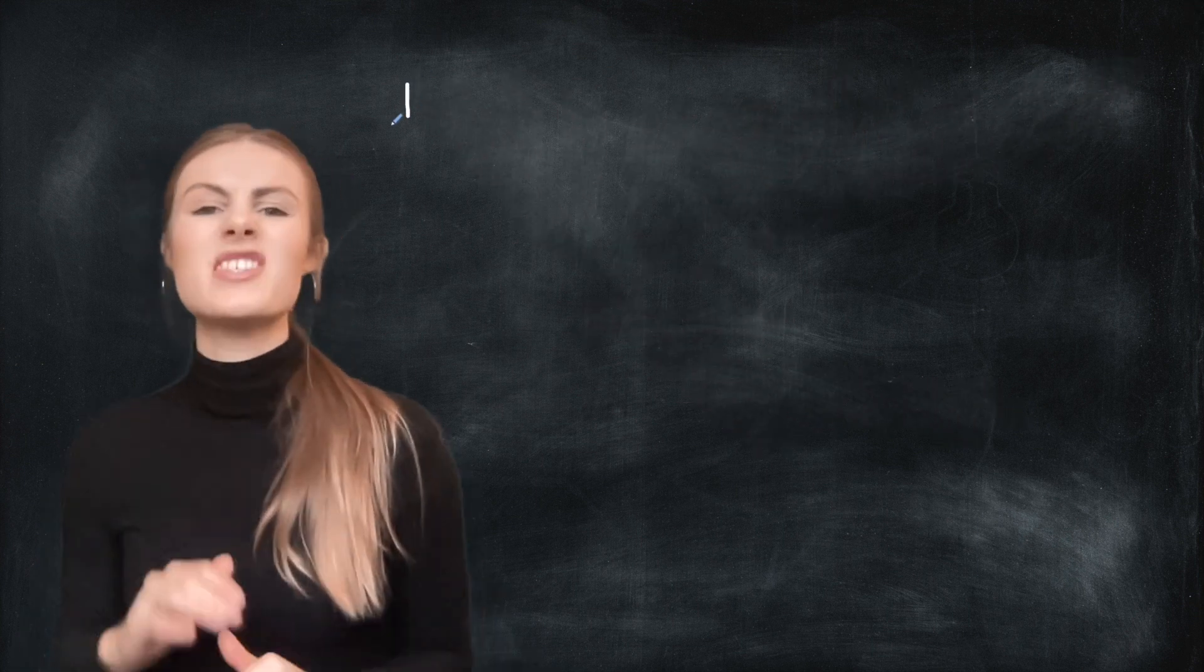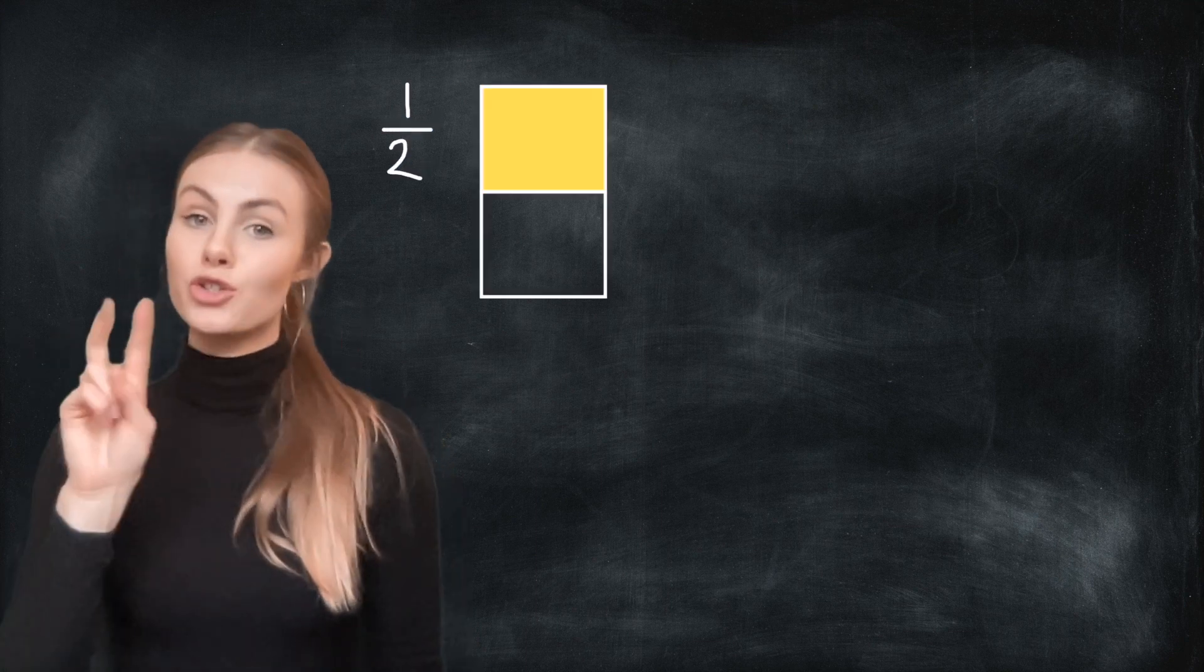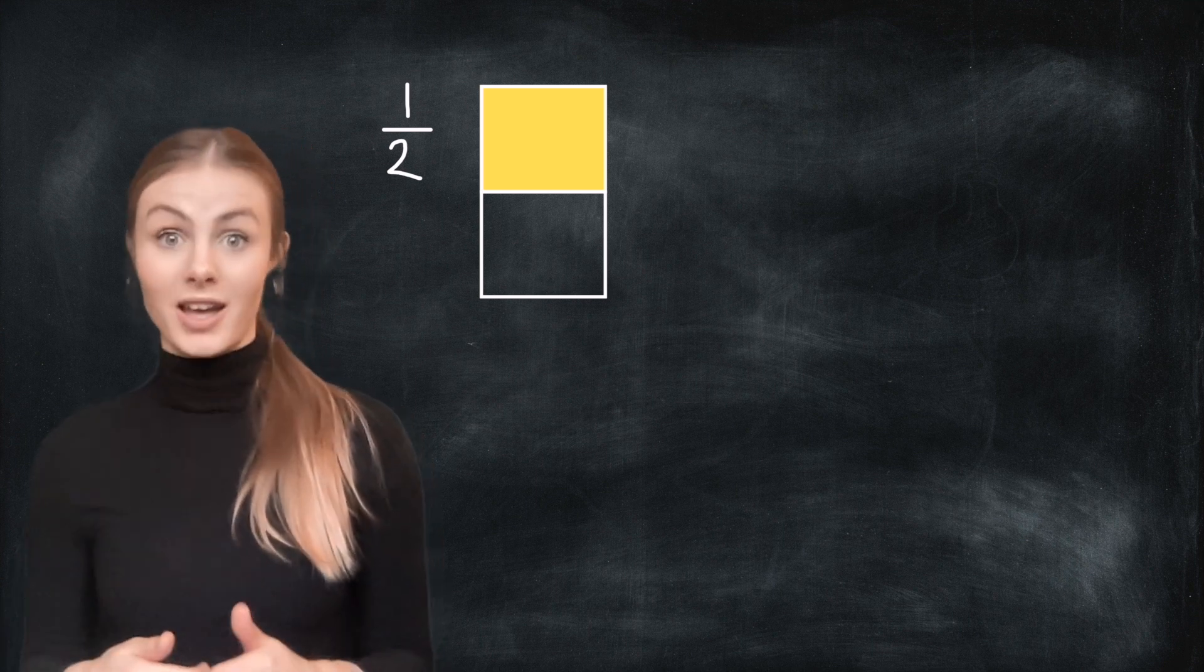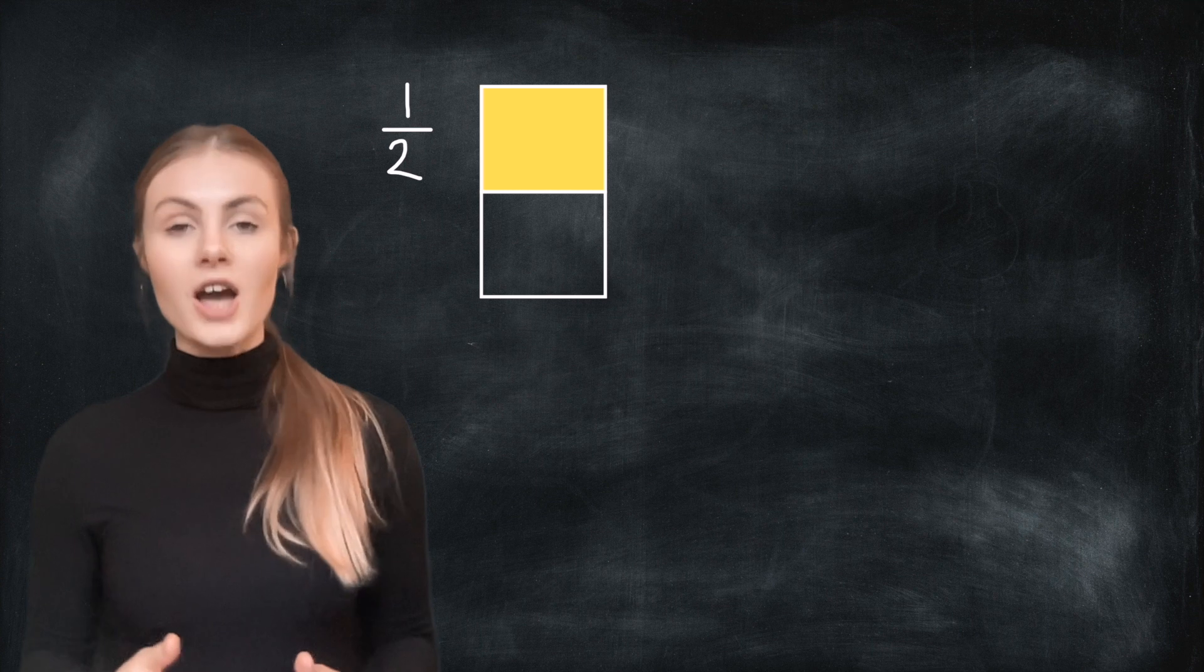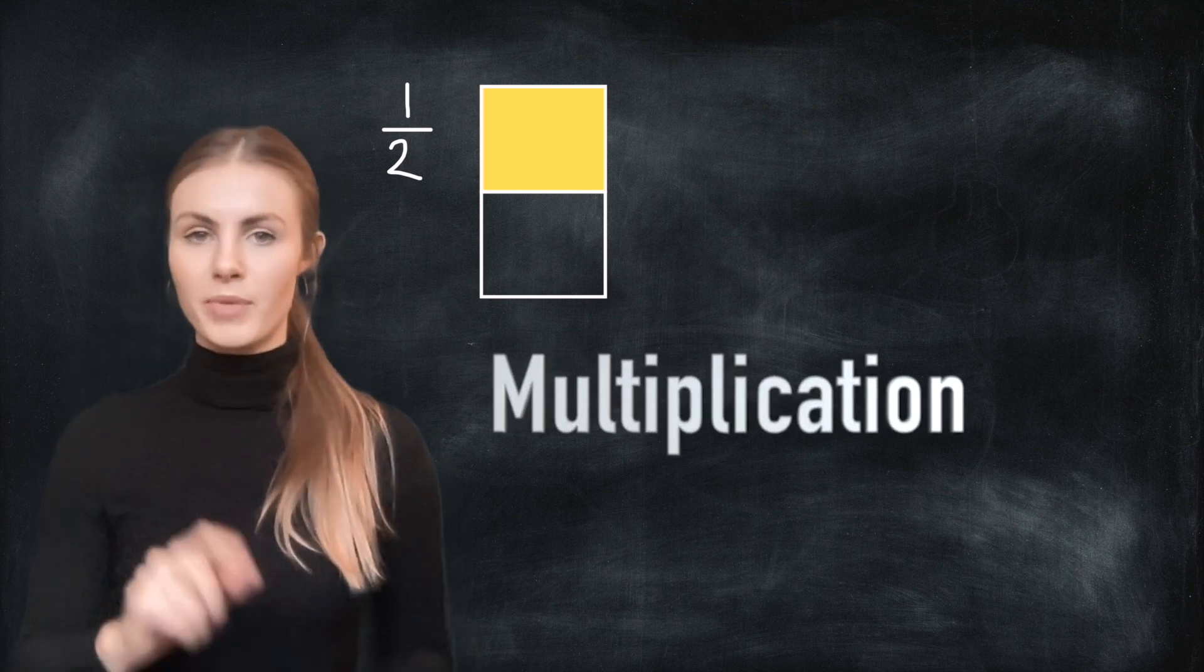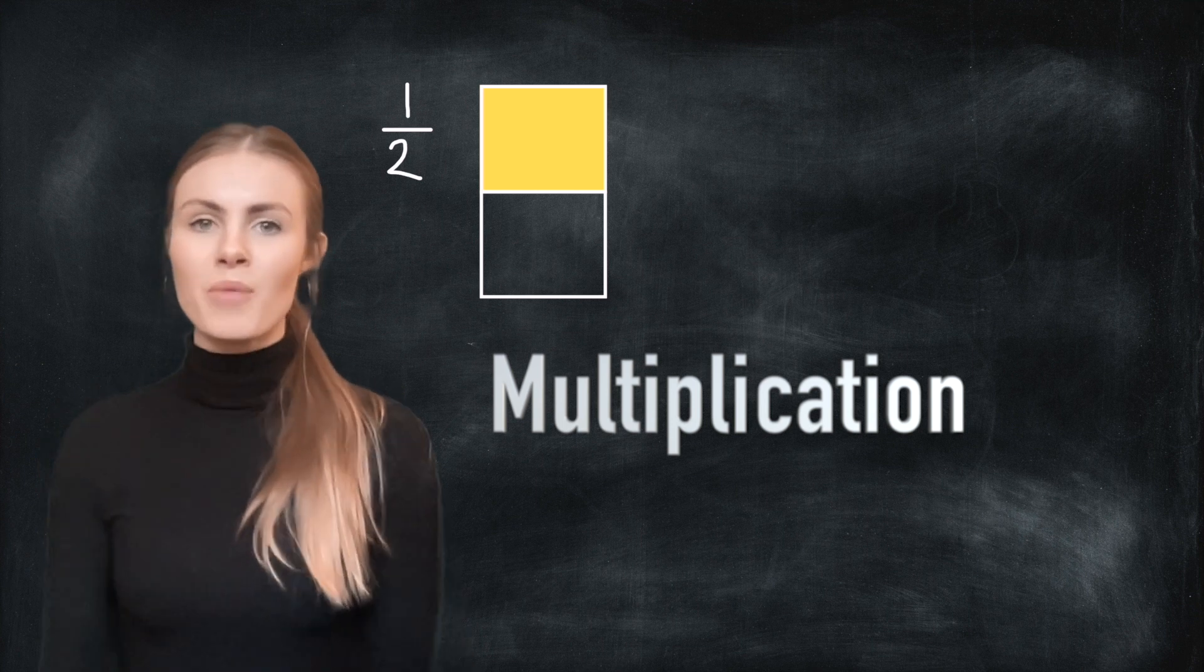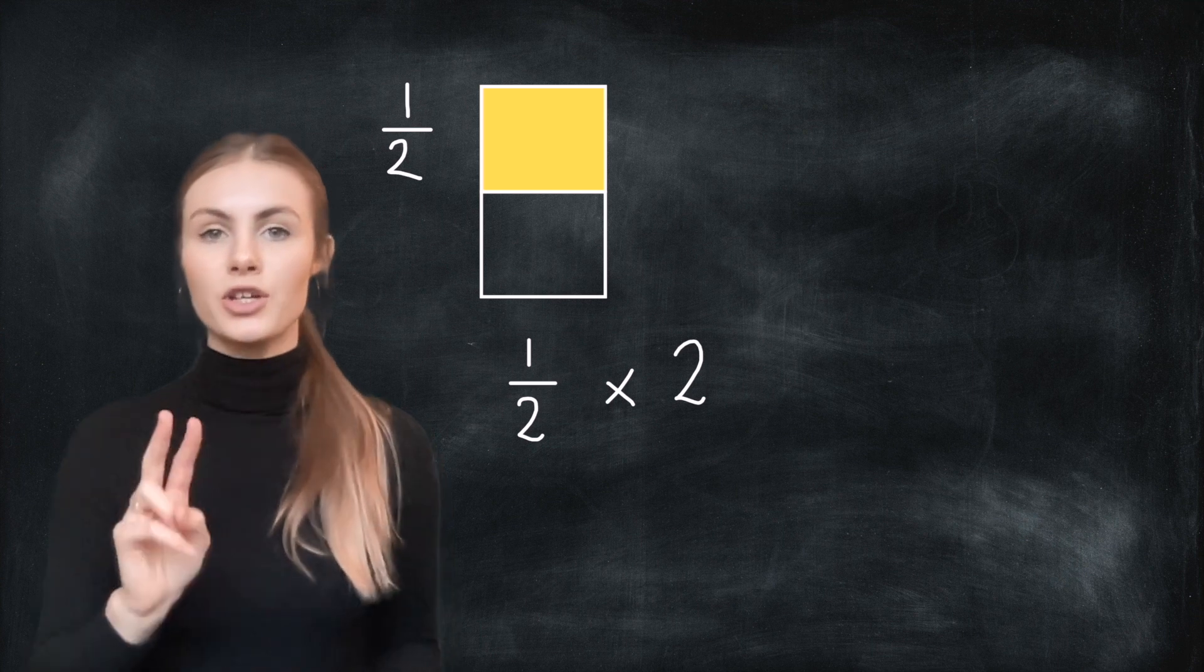Let's start with the most simple fraction we can, one half. And we can see that our whole has been split into two equal parts on this picture, handy. So to find a fraction that equals the same as one half, I'm going to use multiplication. I'm going to multiply my whole fraction by one number. I could pick any number bigger than one but you know what, let's keep it easy. I'm just going to pick two.